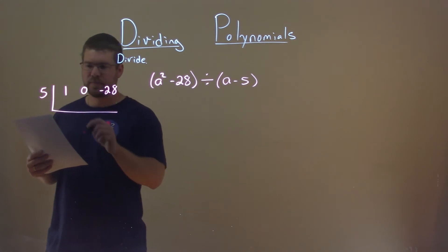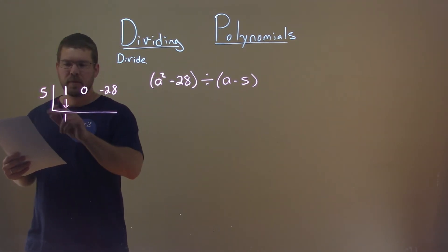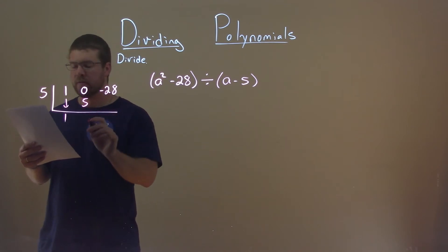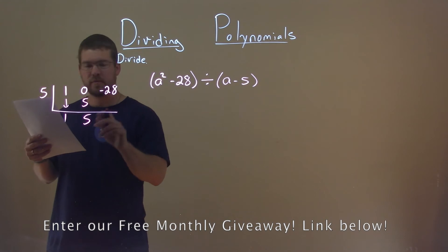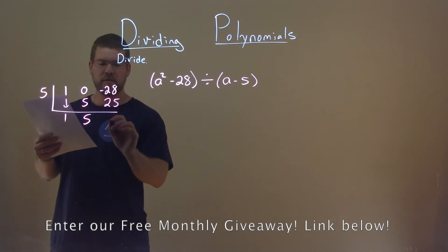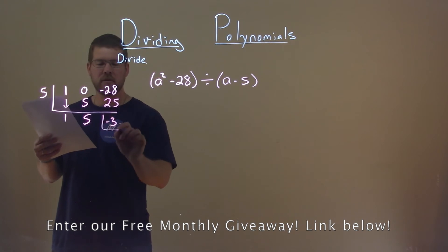Bring down the 1, and 5 times 1 is 5. 0 plus 5 is 5. 5 times 5 is 25. And negative 28 plus 25 is a negative 3, and that's our remainder.